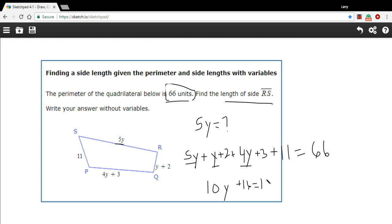So I've got 10y plus 16 equals 66. And I can subtract 16 from both sides. And I get 10y equals 50. And then I just divide both sides by 10. And I get y equals 5.